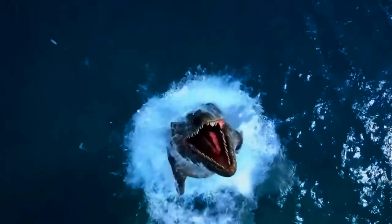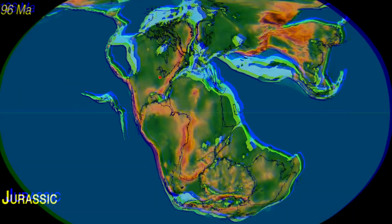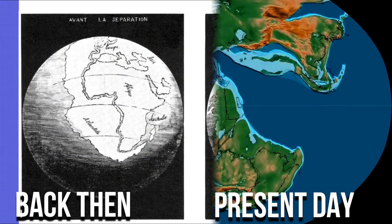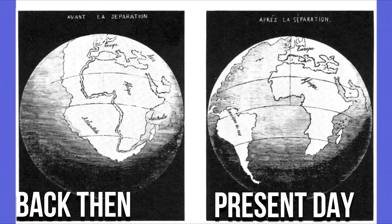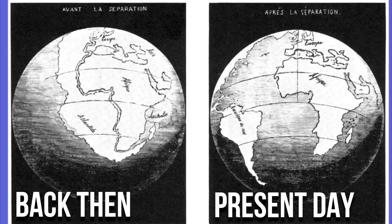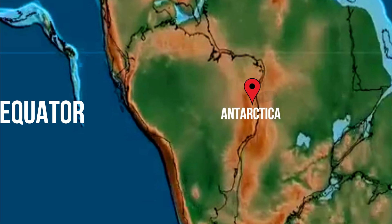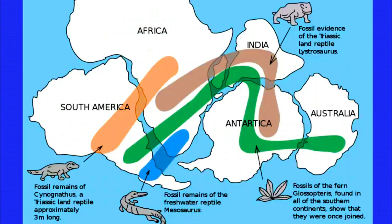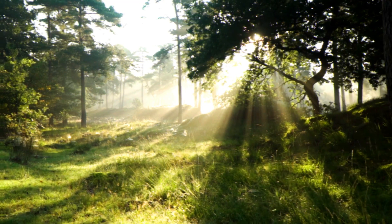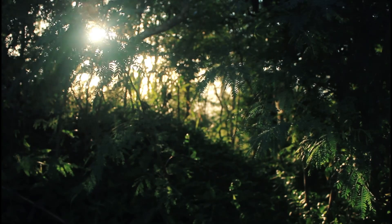Our story begins around 90 million years ago, when Antarctica was part of a supercontinent called Gondwana. Back then, the continents were not divided but were assembled together to form a single large landmass. It was located in the southern hemisphere, closer to the equator than it is today, surrounded by what is now Africa, South America, India, and Australia. The climate in Antarctica was much milder and warm, just like the other places near it.